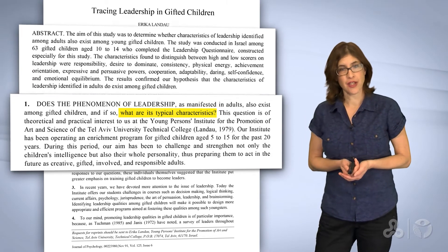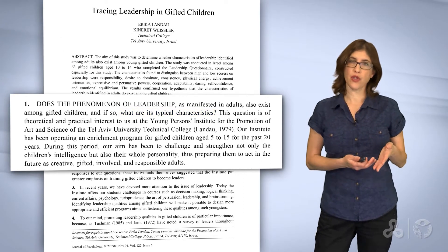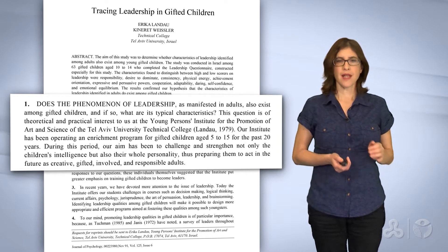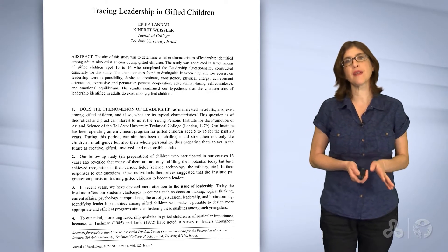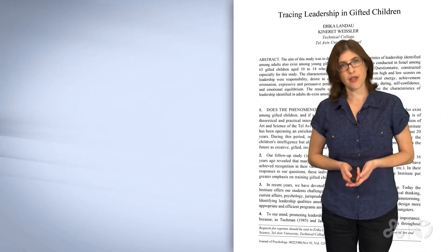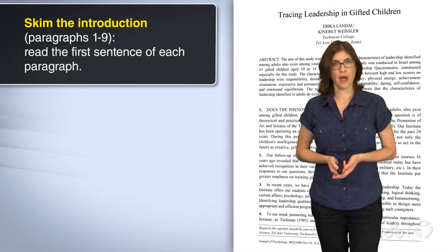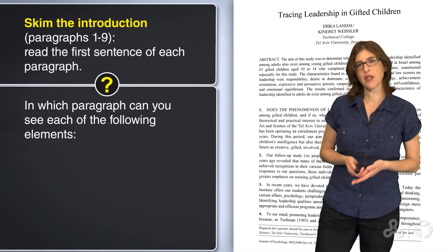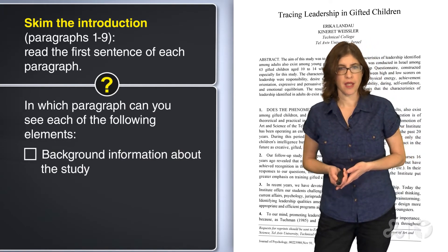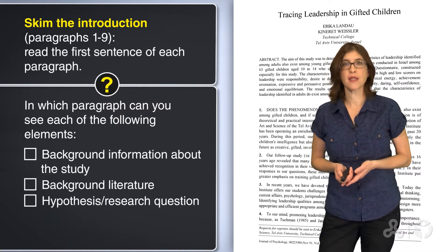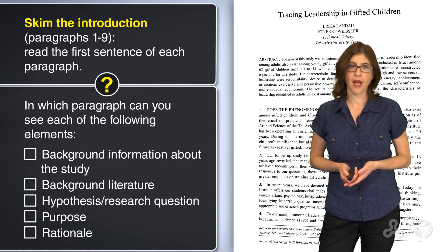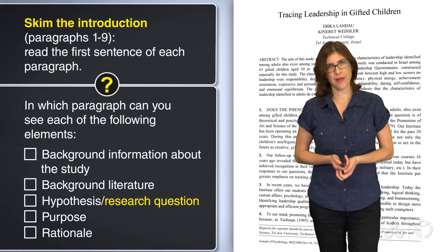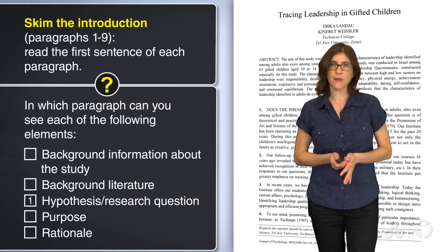Let's go back to our introduction section. We saw that the introduction began with the research question, but not every introduction begins this way — every introduction has its own structure. So let's see how the writers of this text organized their specific introduction. First, we will skim the section. Skim the introduction, paragraphs 1 through 9, and read the first sentence of each paragraph. In which paragraph can you see each of the following elements: background information about the study, background literature, hypothesis or research question, purpose, and rationale? We already saw the research question was in paragraph 1. Press pause and come back when you're done.